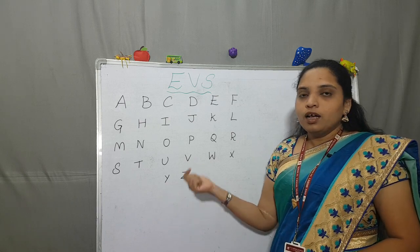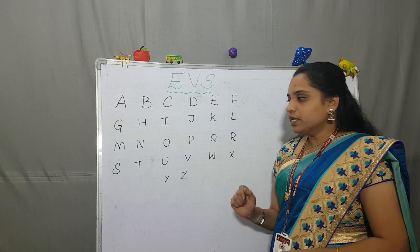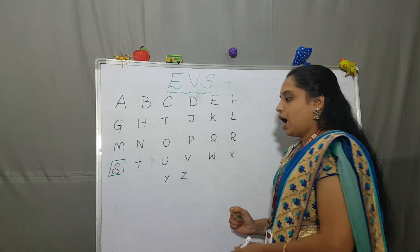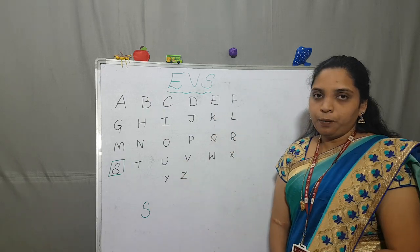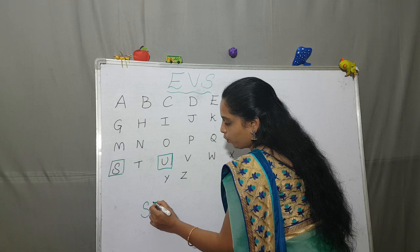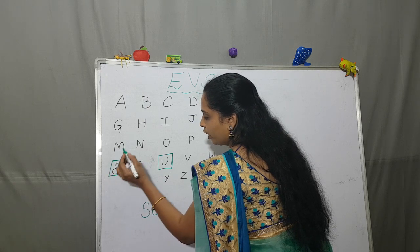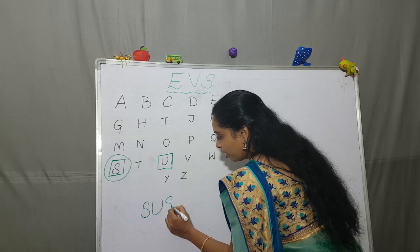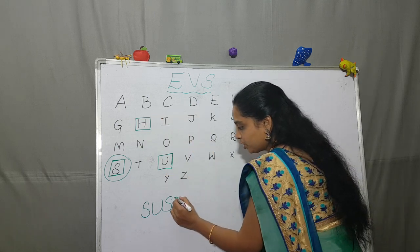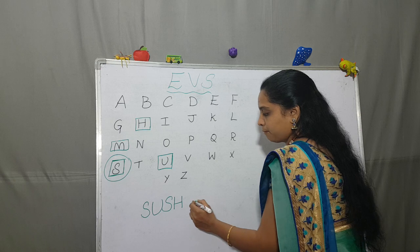In this activity I am going to circle the letters in my name. My name is Shushma. So the first letter of my name is S. The next letter is U, then again S. Then the next letter is H, and the next letter is M.